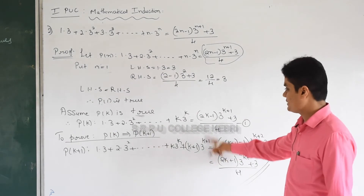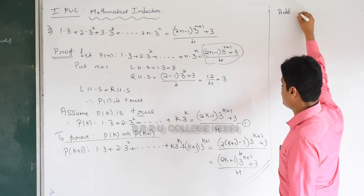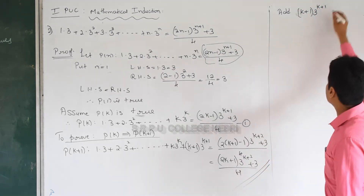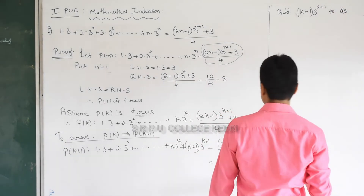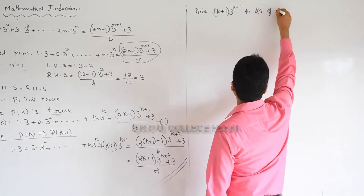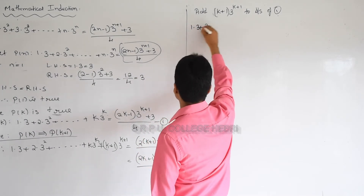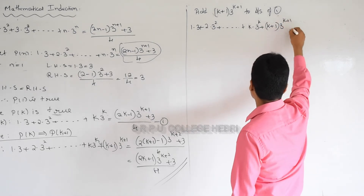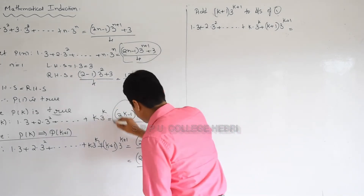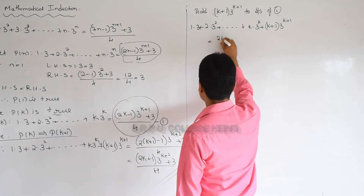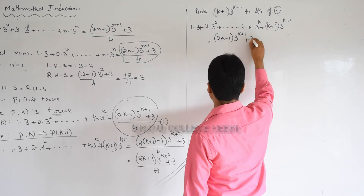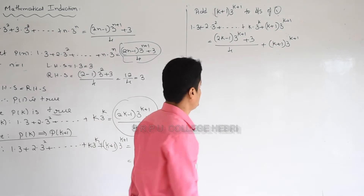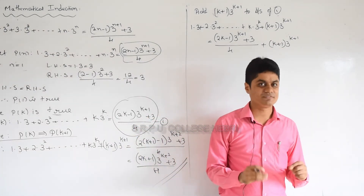Simplify the right hand side. Compare with equation 1 — the missing term is (k plus 1) into 3^(k+1). Add that missing term to both sides of equation 1. Left hand side is solved immediately. Right hand side becomes: (2k minus 1) into 3^(k+1) divided by 4 plus 3 divided by 4, plus (k plus 1) into 3^(k+1). Take 3^(k+1) outside: (2k minus 1) by 4 plus (k plus 1), keep 3 by 4 as is. Take LCM as 4 giving 3^(k+1) times (2k minus 1 plus 4k plus 4) by 4 plus 3 by 4.